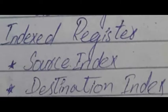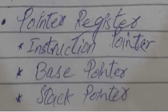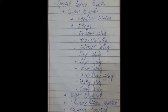Third is Index Register which includes Source Index and Destination Index. Fourth is Pointer Register which includes Instruction Pointer, Base Pointer, and Stack Pointer. Then comes Special Purpose Register which includes Control Register, Instruction Pointer, Shift Register, Memory Address Register, and Program Counter.